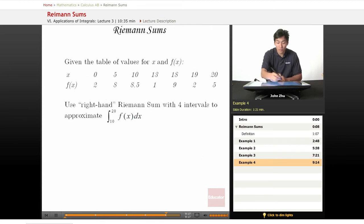Same setup, now we're using the right-hand rule, the right-hand Riemann sum with four intervals, evaluated from 10 to 20.